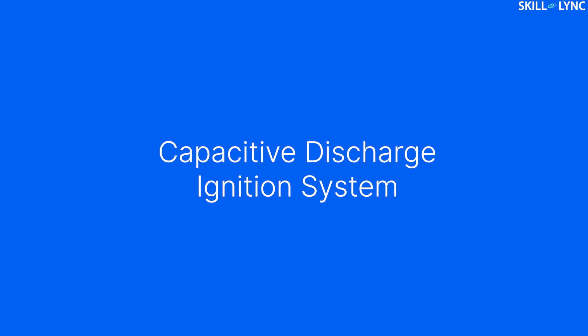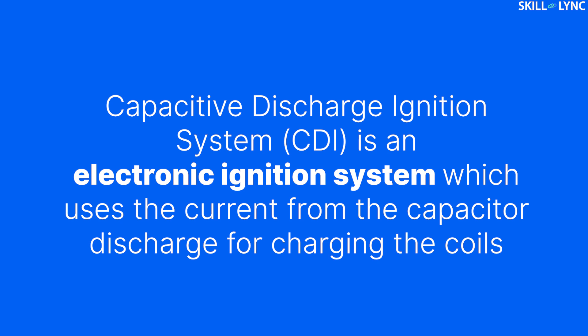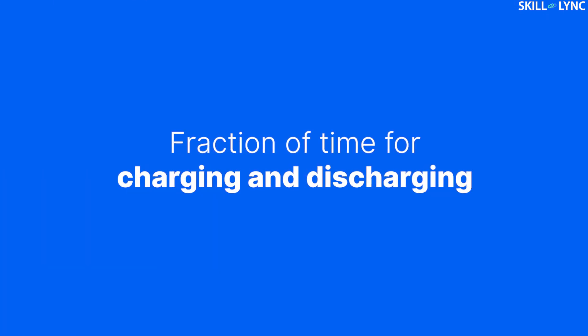In order to overcome this, a Capacitive Discharge Ignition System was developed. The Capacitive Discharge Ignition System is an electronic ignition system which uses a capacitor that can store and discharge charges. The high current from the capacitor discharge is used for charging the coil. The capacitor takes only a fraction of time for charging and discharging, making this system more efficient than the others.